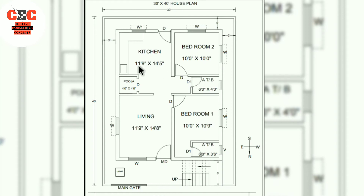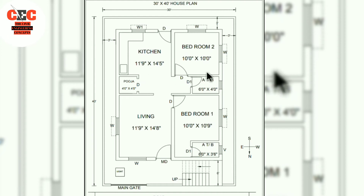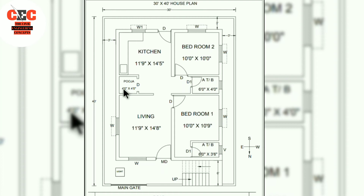The 14 feet 5 inch length is the length including the puja room's length. If we deduct the puja room's length, then the size of the kitchen will be 11 feet 9 inches by 10 feet. The puja room is provided just adjacent to the kitchen and the size of the puja room is 4 feet by 4 feet.